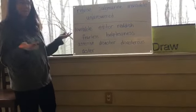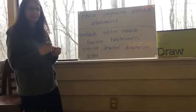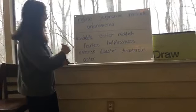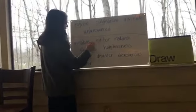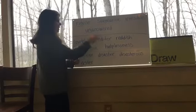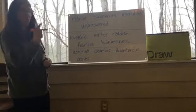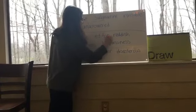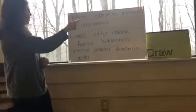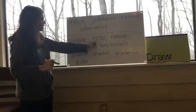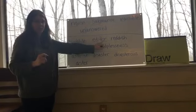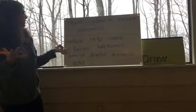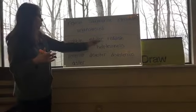Here is another example. The suffix '-or' means 'one who does something.' So 'editor' means one who edits. For suffixes, I mark them off by using this little L shape. So the word 'editor' with the suffix '-or' at the end means one who edits.